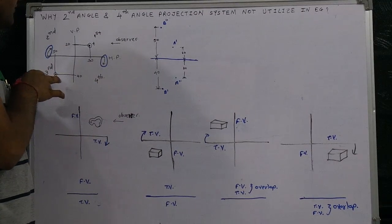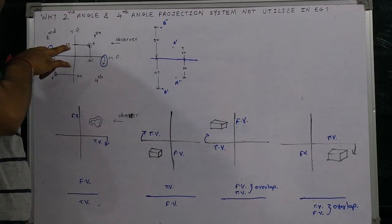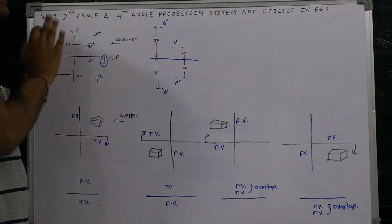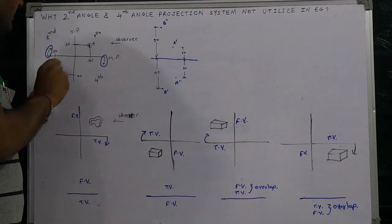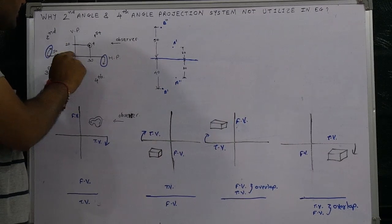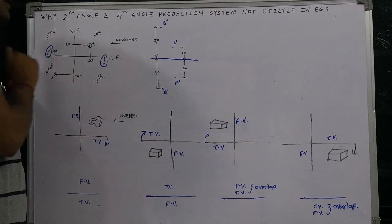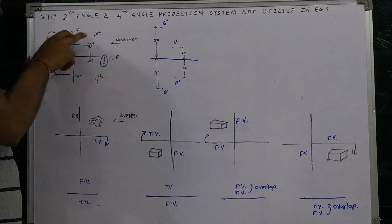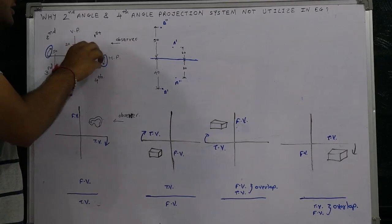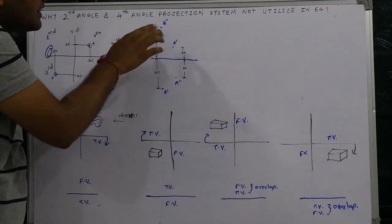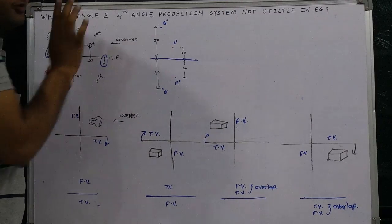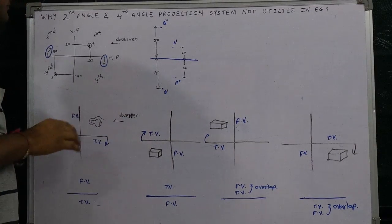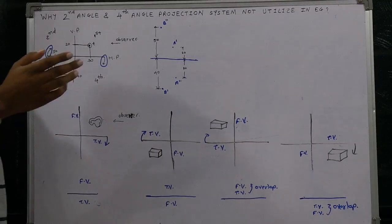If the point lies in the third quadrant, the horizontal plane must move in an upward direction. So whatever is drawn on the upward side of the reference line is the horizontal plane projection in the case of third angle projection. In third angle projection, the horizontal plane projection B'' lies at the above side, whereas in first angle projection it is at the downward side. The vertical plane projection B' is at the downward side in third angle projection.